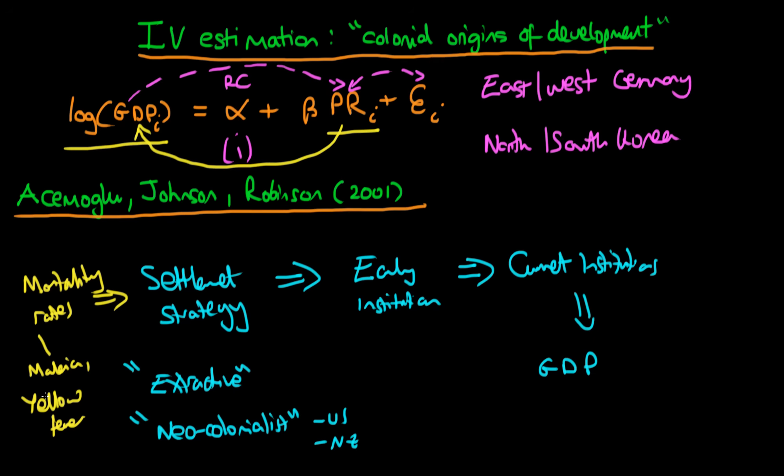For areas such as the Congo where malaria and yellow fever were rife, the regime which was set up was very extractive, which wasn't very good for early institutions. Whereas if you consider the mortality rates for places like US and New Zealand, the mortality rates were much lower, which meant that the early institutions set up there were much better than those in extractive regimes, which has fed through to current differences in GDP.